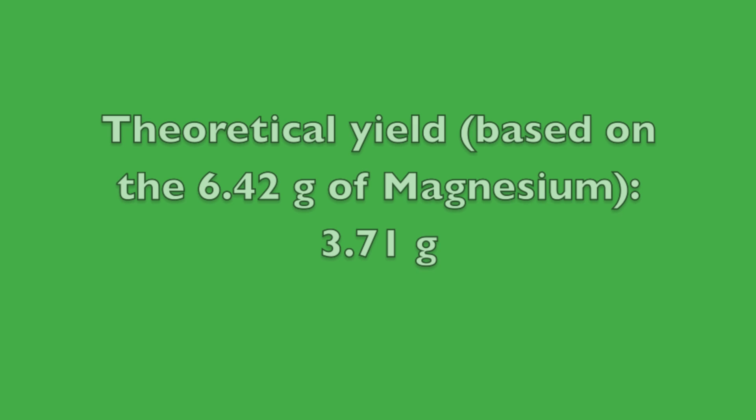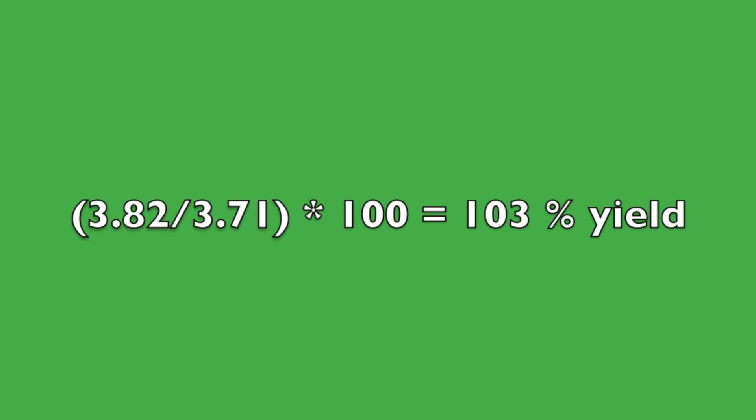The mass of the product is the second mass minus the first one, which comes out to 3.82 grams. The theoretical yield of silicon based on magnesium is only 3.71 grams. So, the 3.82 grams here represents a 103 percent yield.